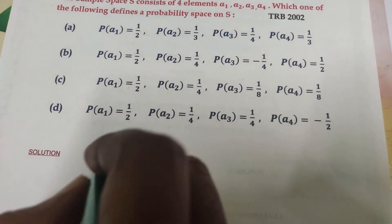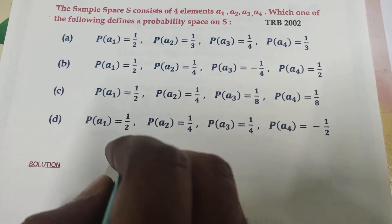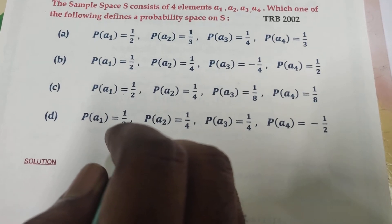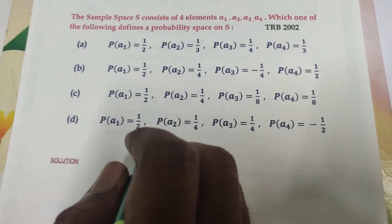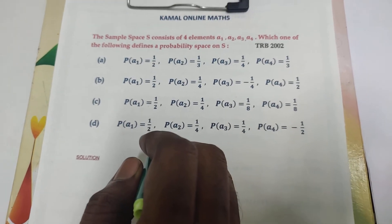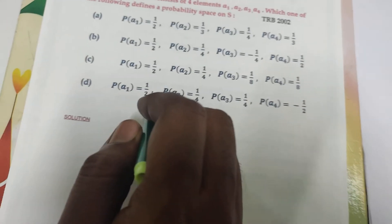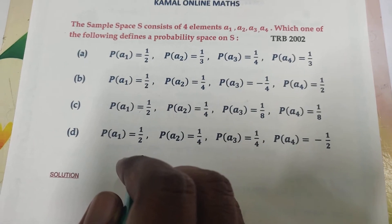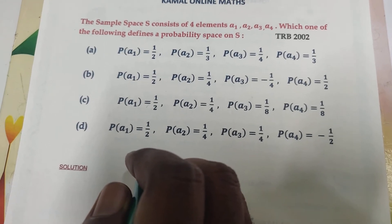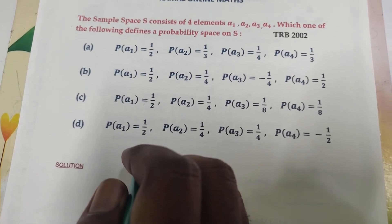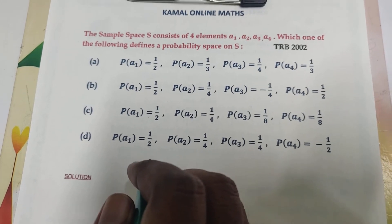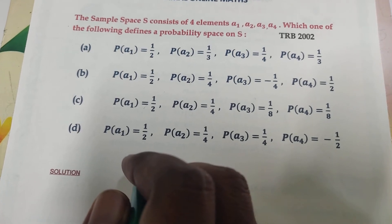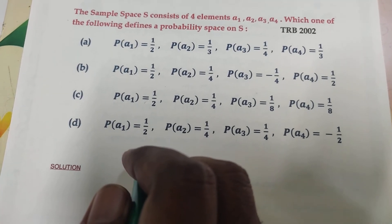Let's recall the definition. The probability of the sample space is 1. The values assigned to each element must be non-zero — that is, greater than zero, positive. The values must lie between 0 and 1. The probability of an impossible event is 0.